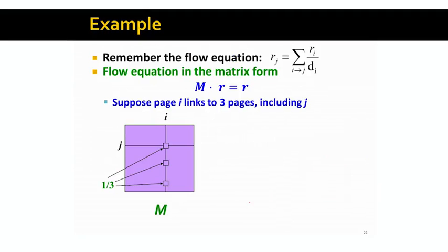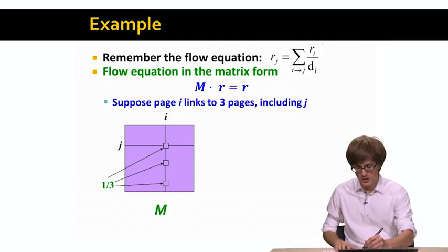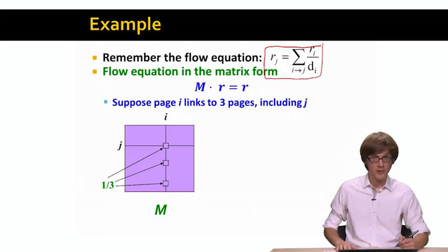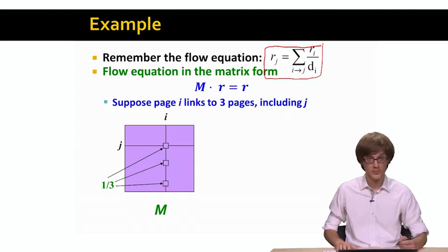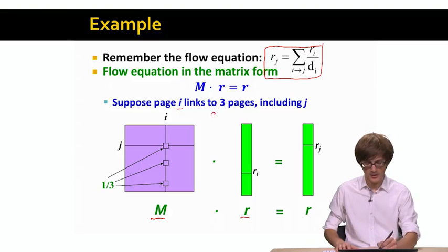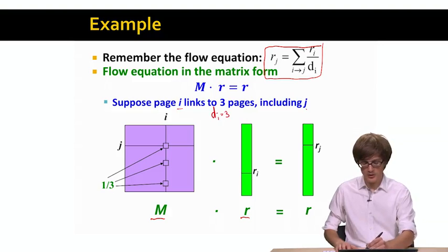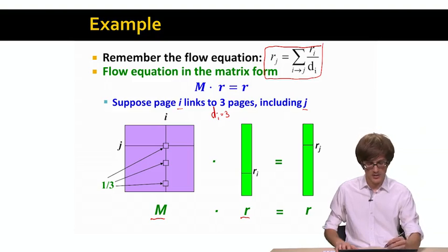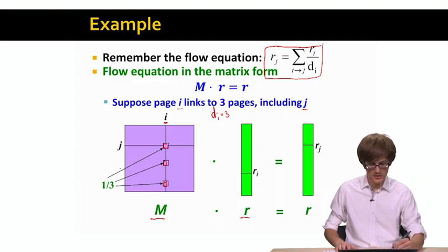Just to demonstrate why we can take our initial flow equations and express them into this vector matrix product, this may not be obvious. So here is how we can understand that what we are doing is actually true and correct. Imagine that I have my matrix M here at the bottom, and I have my vector R, and now I'm multiplying M times R. For the sake of the example, let's assume that page i has the out degree of i equals 3. It points to three other pages, including j. This means that for page i, the ith column of matrix M will have three non-zero elements, indicated by squares. Each of these three non-zero cells will have a value of one-third, one over the outer degree of node i.